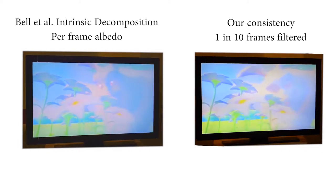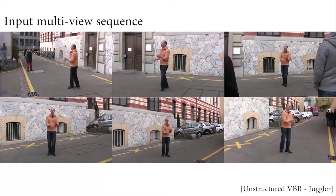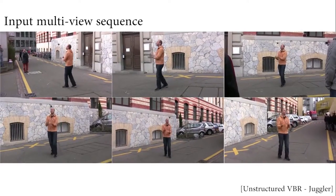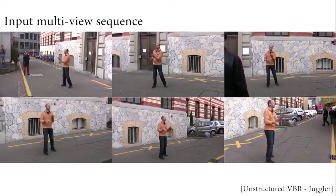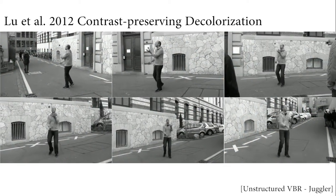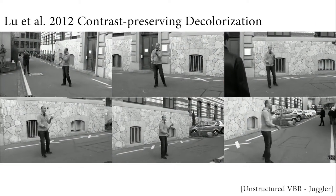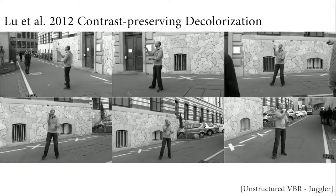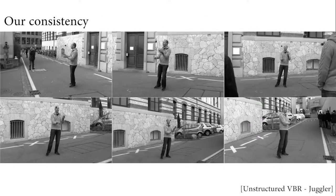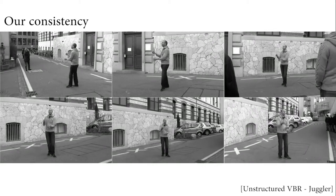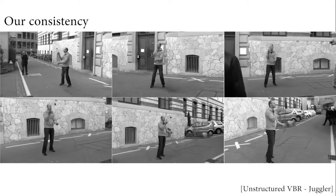We use a non-rigid patch-match method for view correspondences, which makes it possible for our technique to handle some degree of wide baseline separation. Here, we remove temporal flickering and view inconsistency in a contrast-preserving decolorization over a collective baseline of 150 degrees.